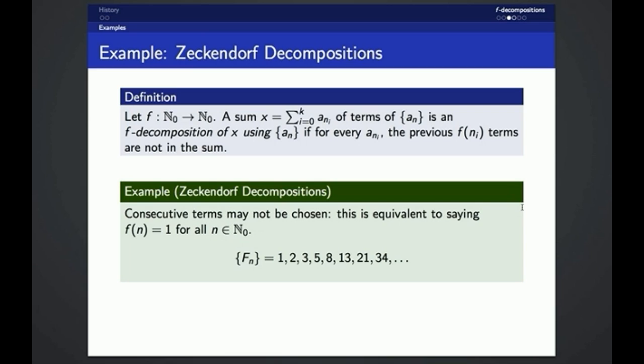So here's one example of using this terminology. The Zeckendorf decomposition, which we've already discussed, which is that consecutive terms in our sequence cannot be chosen. Using the notation of F decompositions, this is equivalent to saying that our function F is the constant function 1. F of n equals 1 for all natural numbers n.